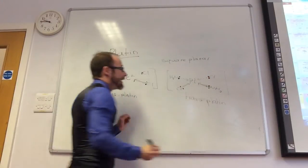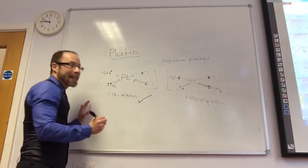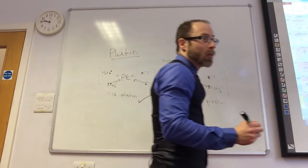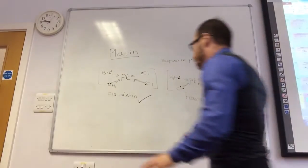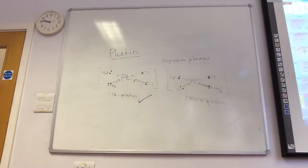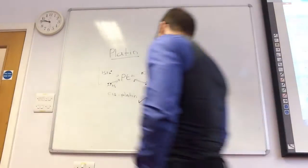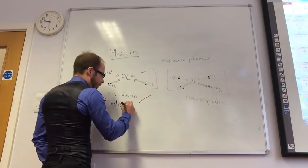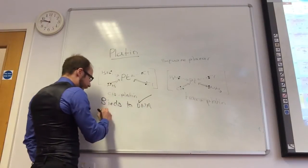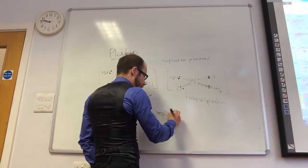Now, one of these is an effective anti-cancer drug and the other one isn't. It's actually cis-platin that is an anti-cancer drug. Trans-platin doesn't work, and it's because cis-platin can bind through ligand substitution to DNA. It disrupts the cancerous DNA so it can't replicate. So if it comes up in a question, which it often does, it's really important to know that it's cis-platin which is an anti-cancer drug, that binds to the DNA, and it prevents it from replicating.